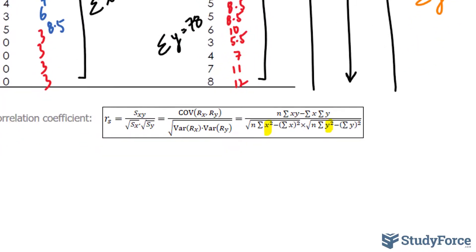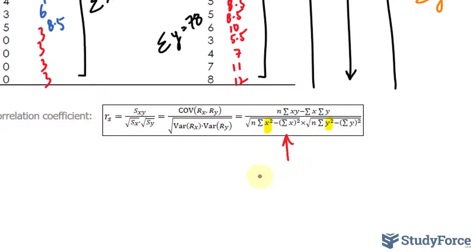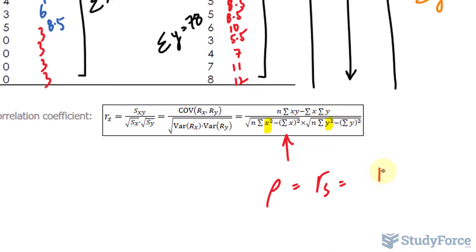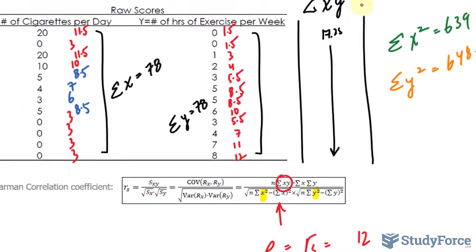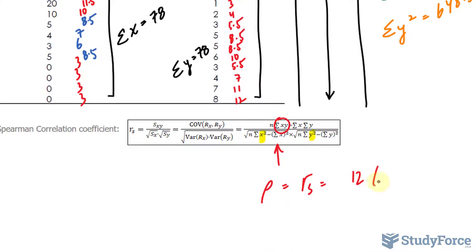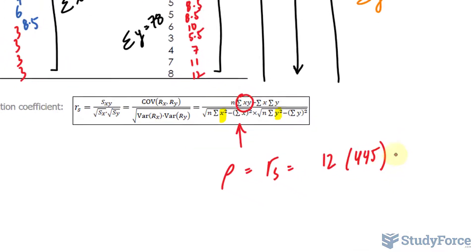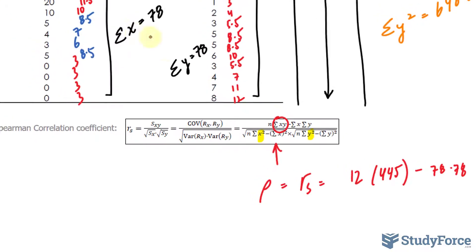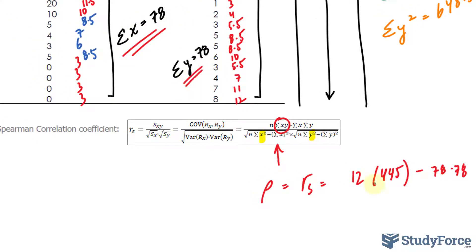Let's go ahead and substitute those into this formula so we can finally calculate our Spearman correlation. And that's denoted with the Greek letter rho or r sub s and represents the number of observations. We have 12 observations. This value is right here, 445, minus 78 times 78. These two. Over. Over.